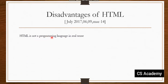The first disadvantage is that HTML is not a programming language in the real sense. It doesn't have a compiler and cannot convert high-level to low-level language. As we covered in the first lecture, HTML is not a programming language — it is more of a scripting language. Because it is not a programming language, this is considered a big disadvantage of HTML.